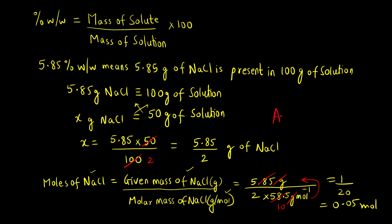So this is our final answer for moles of NaCl. The correct answer is option C, that is 0.05 moles. I hope you understood this question. Thank you so much.